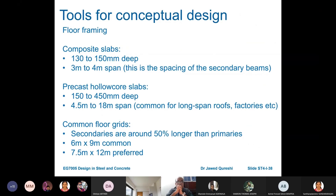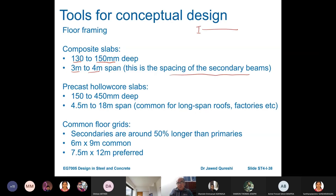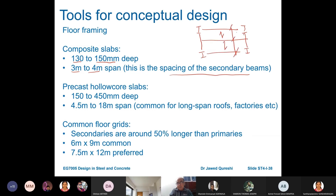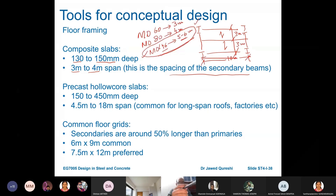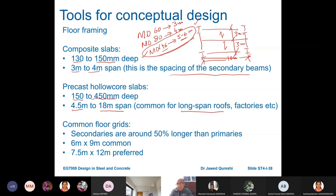For framing, composite slabs are typically 130 to 150 millimeters deep and are fine for three to four meter spans — this is the spacing between secondary beams. We also have a choice of precast hollow core slabs, with depths ranging from 150 to 450 millimeters and spans between 4.5 to 18 meters, which are common for long roofs or factories.